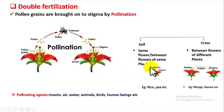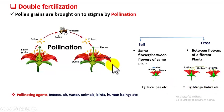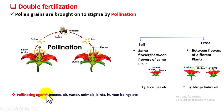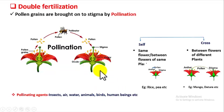For self-pollination, examples are rice and pea. For cross-pollination, examples are mango and datura. Pollen grains are not always brought by bees — there are several pollinating agents: insects, air, water, animals, and even human beings. By some agent, the pollen grains are brought over the stigma of the flowers.